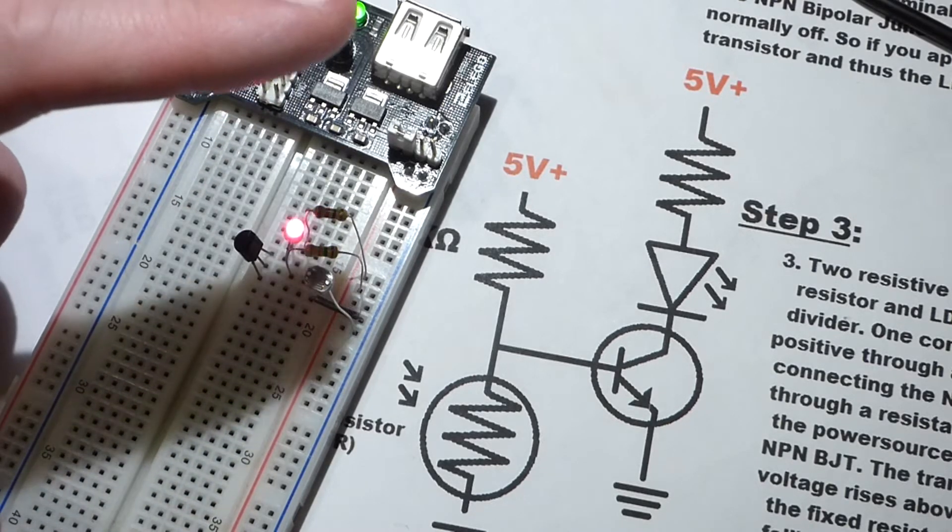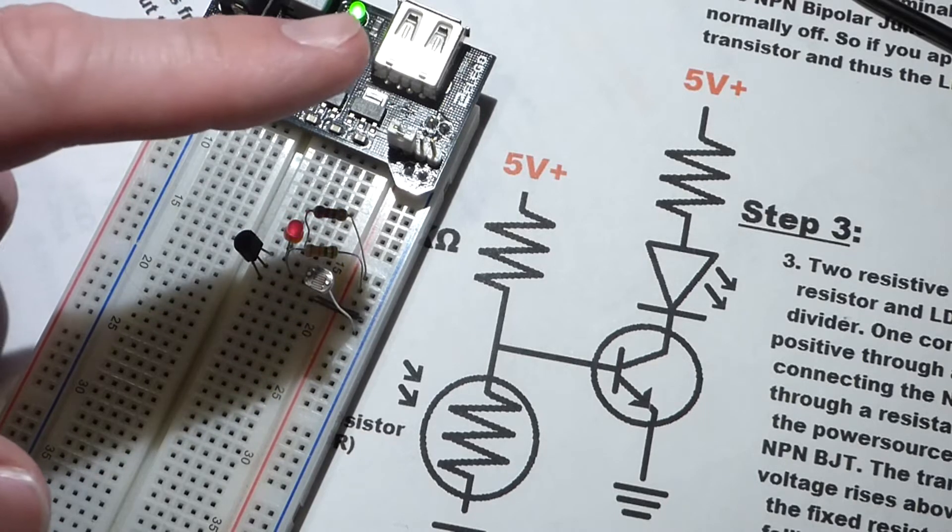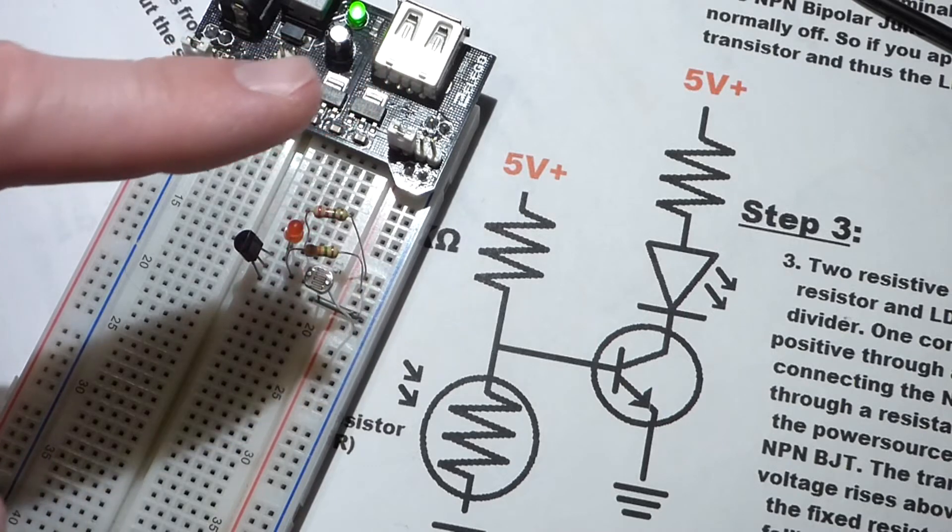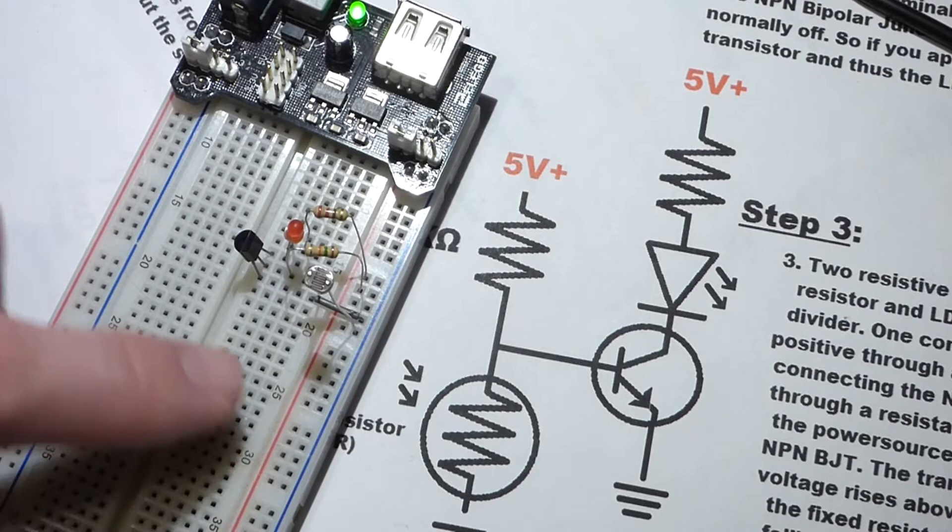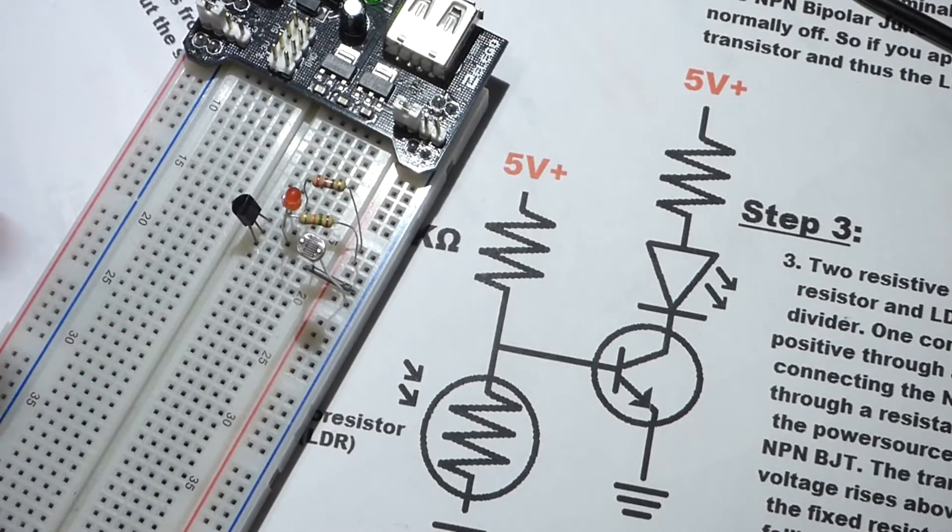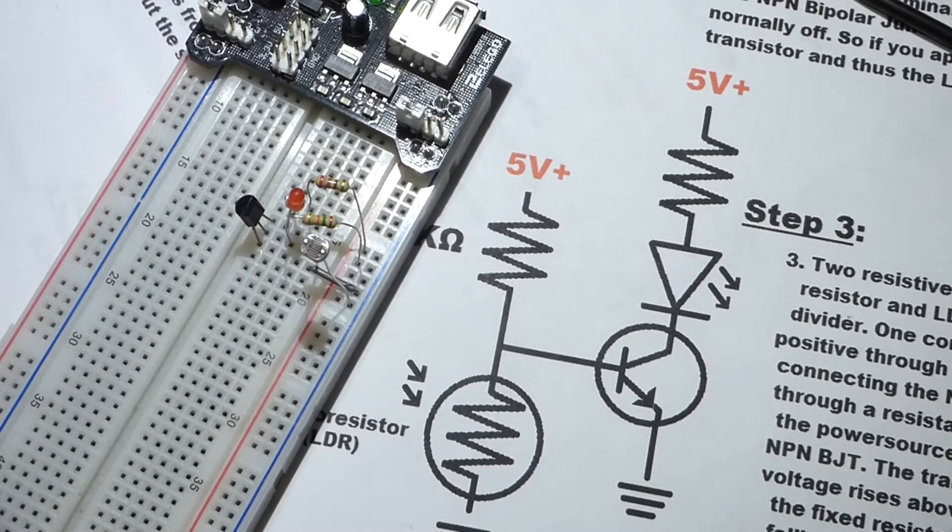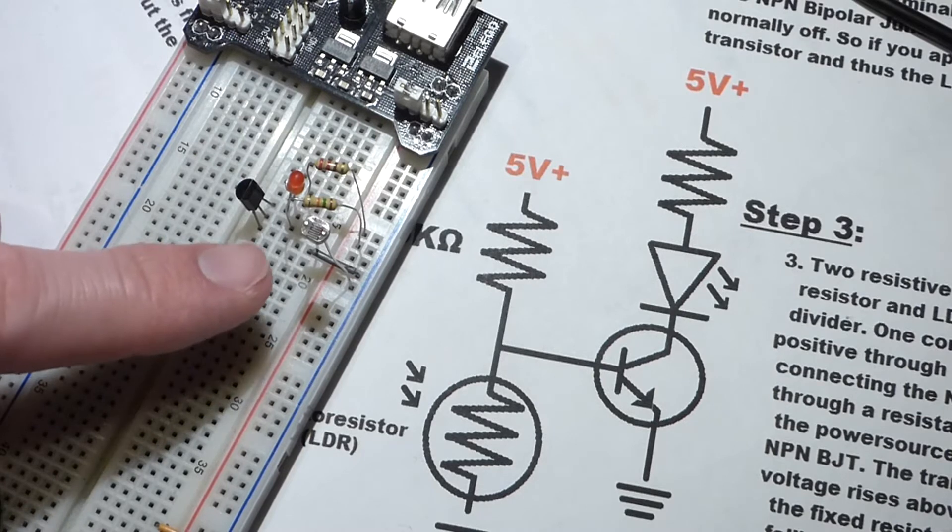I could also cover the light-dependent resistor with my finger, block the light from it, and the LED will turn on. So you can see that working without the major light differences. But that's all there really is to this. The light-dependent resistor is really a sensor, a light sensor, for this circuit.